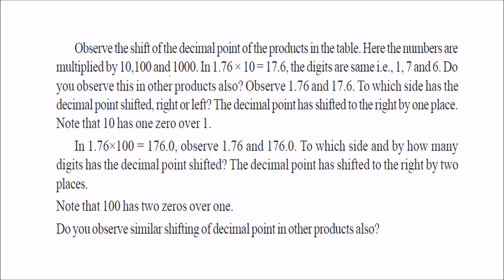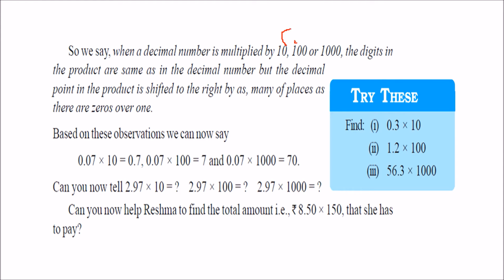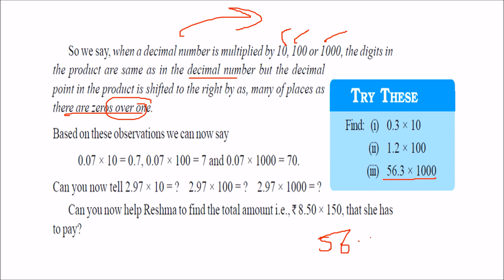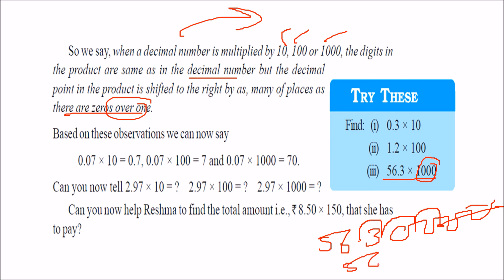So whenever you are multiplying by 10, 100, 1000, or any power of ten, you just shift the decimal to the right — one place for each zero. When a decimal number is multiplied by 10, 100, or 1000, the decimal point in the product is shifted to the right by as many places as there are zeros. For example, 56.3 into 1000 — write 56.300. Shift three places: 1, 2, 3 — this becomes 56300.